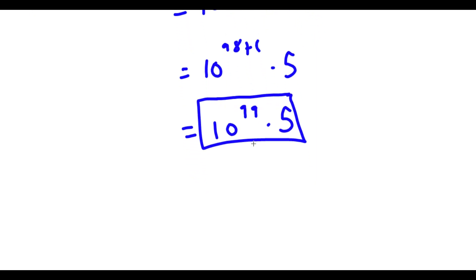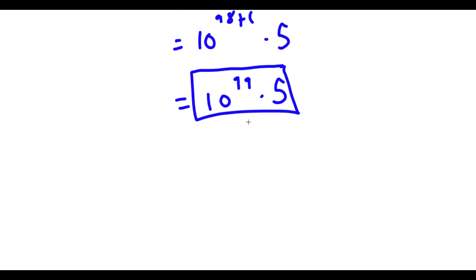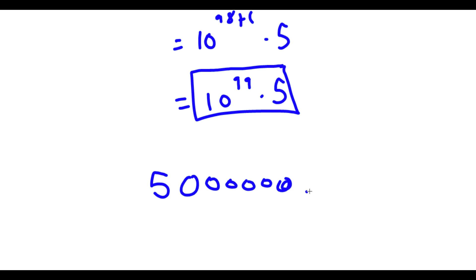And if you're wondering how big a number this is going to be, this is actually going to be 5 followed by 99 zeros — and on and on. So that is our answer.